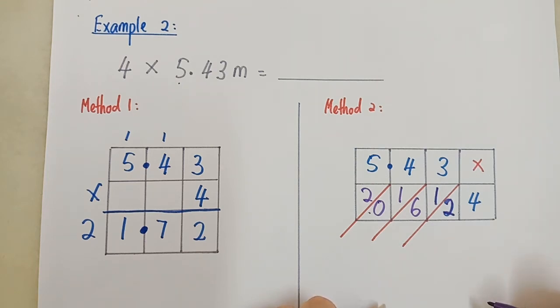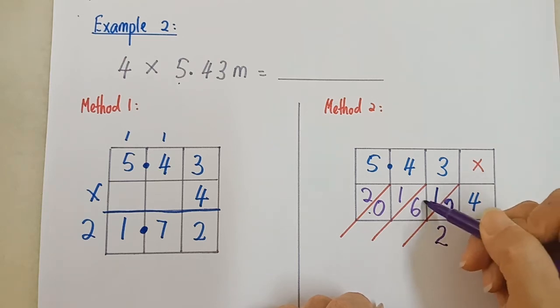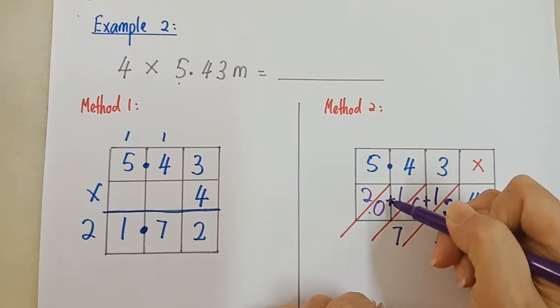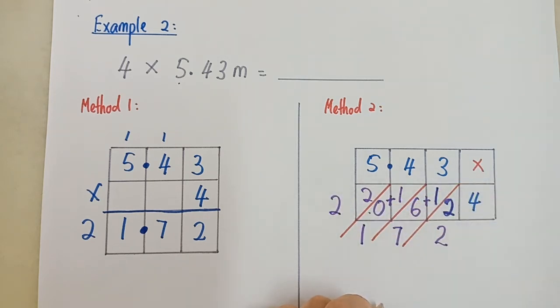Lepas tu, tambah kan? Ikut lorong. Lorong ini, pertama ni, 2. 1 plus 6, 7. Ini, 1 plus 0, 1. Yang ini, 2.